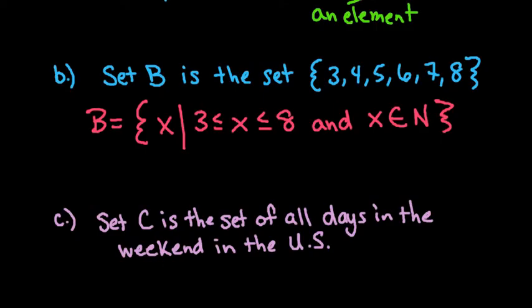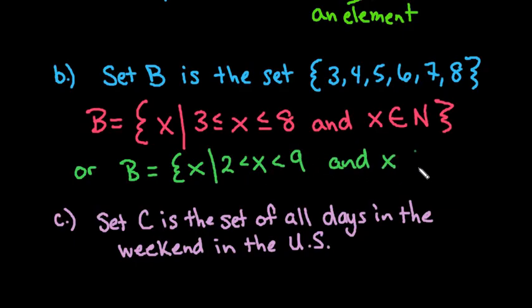The other way that would have also been acceptable to write this one is you could have written it as B is X such that X is greater than 2 but less than 9, and X is an element of the natural numbers. So 2 and 9 means that it doesn't include 2 and 9 - it's just everything in between 2 and 9 and also the set of all natural numbers.